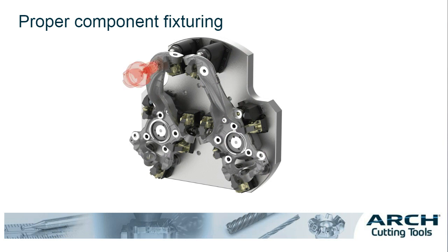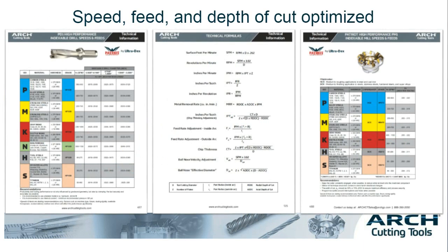And lastly, speed, feed, and depth of cut. I intentionally left this until the end because I'm most certain that this is where we've all been guilty of starting when applying cutting tools. The essential building blocks of these three critical parameters are only as strong as the environment and connectivity we put them in. The strength of the most high-performance cutting tool is only as strong as the connectivity to the machine itself. We are potentially undermining cutting tool performance with an inferior setup, missing out on significant optimizations such as higher metal removal rates, cycle time reduction, productivity gains, and throughput.